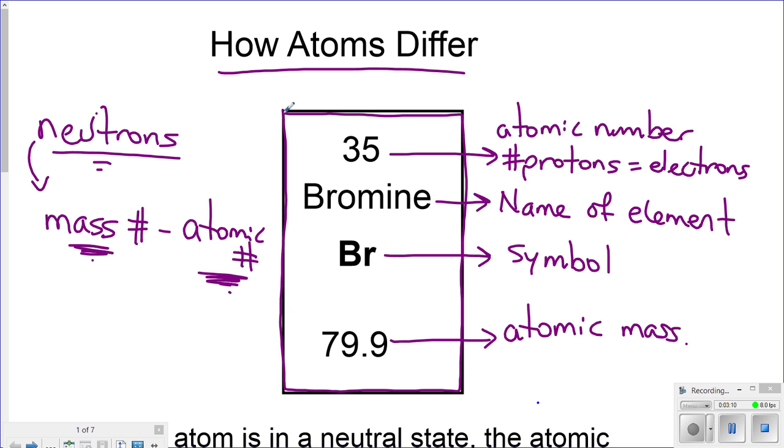Neutral state meaning that it has the same number of electrons and same number of protons. Positives and negatives are the same.